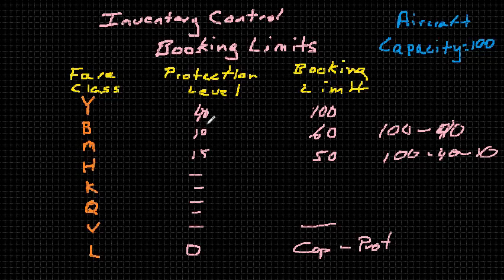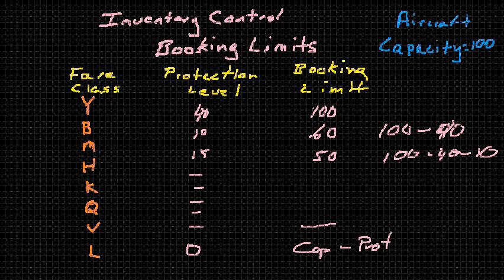If they have underestimated the number of people who would want to buy these higher fares, they can still sell them. Of course, lower fare customers will tend to book before high fare customers, so it's very possible that when those higher fare customers show up, there will only be 40 seats left because they've already been sold to lower fare customers. This is certainly not as good as getting the numbers right in the first place, but it does allow the airline to capture some of an opportunity they might have otherwise missed if those customers do show up.